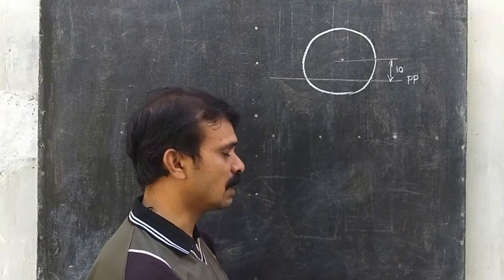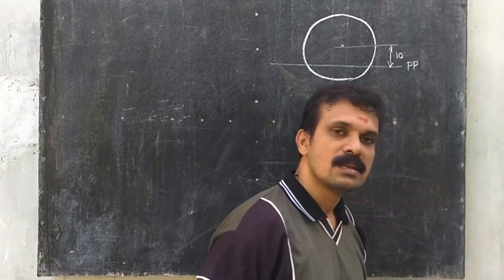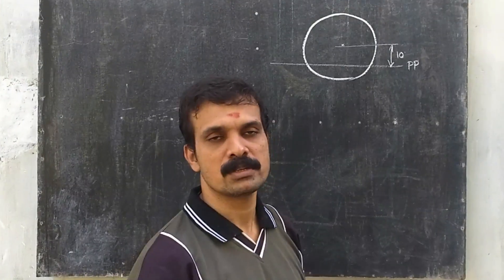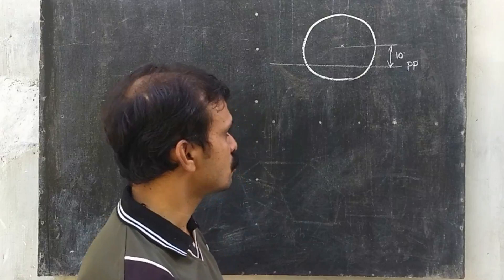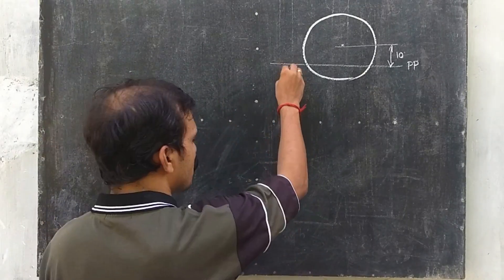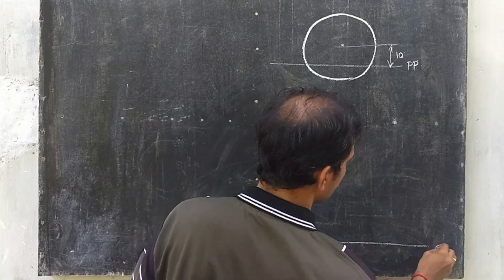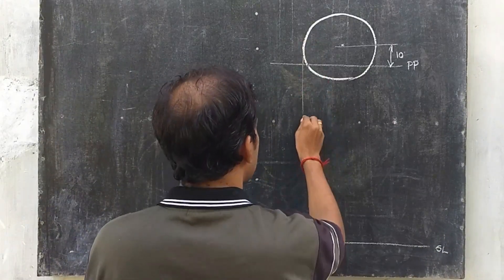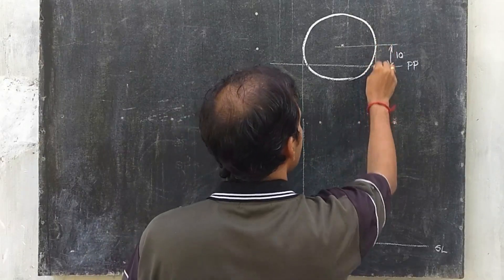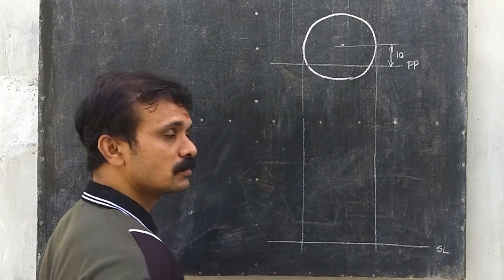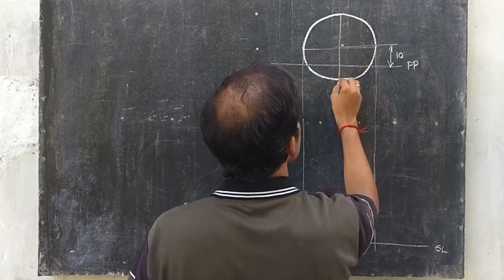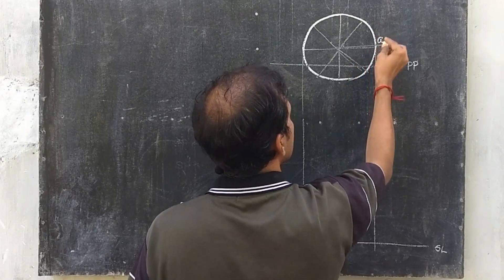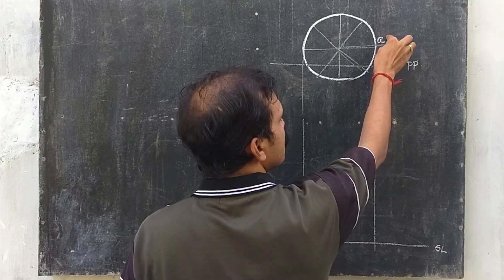Now we have to look at the ground line. The station point is 70 mm in front of the picture plane and 40 mm above the ground plane. So you can draw the ground line at that distance. Now divide the circle into 8 equal parts. This is the top view, so label the points A, B, C, D, E, F, G, and H.